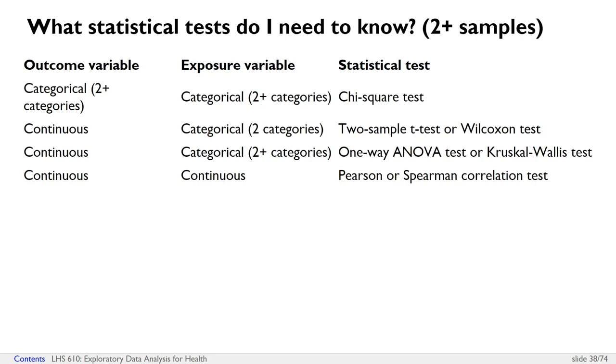In the same situation, let's say you've got one variable that's categorical, but now it has more than two categories, and then you've got another variable that's continuous. This will then be a one-way ANOVA test or a Kruskal-Wallis test. Even though I have these tests separated by ORs, they're not the same test.